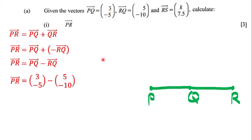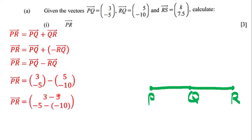RQ is equal to (5, -10). To subtract two matrices, you must subtract corresponding entries. So we have 3 minus 5, and negative 5 minus negative 10. What is 3 minus 5? That's negative 2.